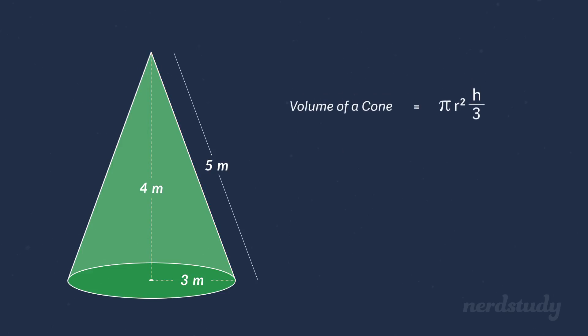Now we can get the volume of this cone easily since we have all the values for our formula. If we plug them in, we get pi times 3 squared times 4 over 3. This equals roughly to 118.435 meters cubed.